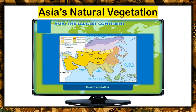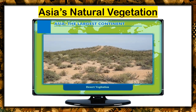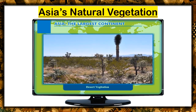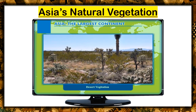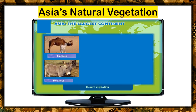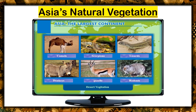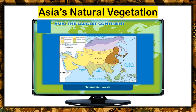Desert vegetation is found both in the mid-latitude deserts as well as the hot desert areas of Southwest and Central Asia. The vegetation consists of scanty growth of short shrubs and thorny bushes. In hot desert areas, camels, donkeys, gazelle, scorpions, lizards, and rodents are a common sight. Yaks can be seen in the mid-latitude cold desert areas.